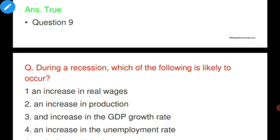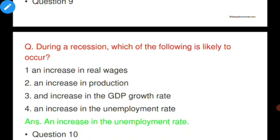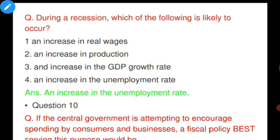Question number nine: During a recession, which of the following is likely to occur? Recession is a state of the economy in which all economic activities — income, employment, interest rates — are low. Options: increase in real wages, increase in production, increase in GDP growth rate, increase in unemployment rate. Option four is correct — increase in the unemployment rate.